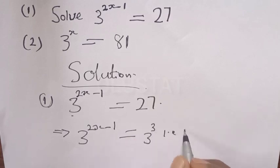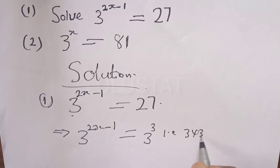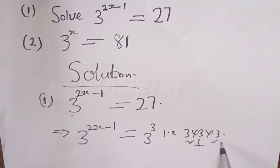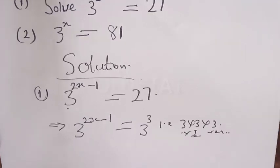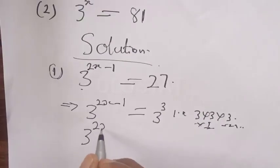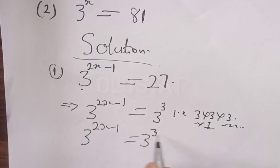This implies that 3 raised to power 2x minus 1 is equal to 27, which can be expressed as 3 raised to power 3. That is, 3 times 3 times 3: 3 times 3 is 9, and 9 times 3 is equal to 27. Therefore we have 3 raised to power 2x minus 1 is equal to 3 raised to power 3.